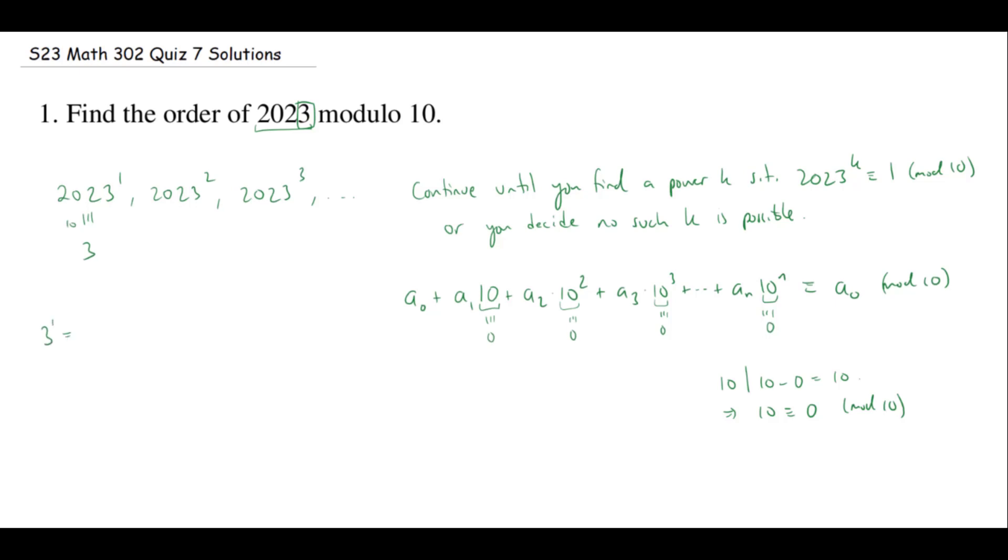Three to the first is congruent to three because it's actually equal to three. How about three squared? Three squared is equal to nine, which is congruent to nine mod 10. But also it's congruent to negative one. Now, why am I happy about that?